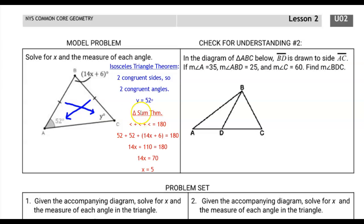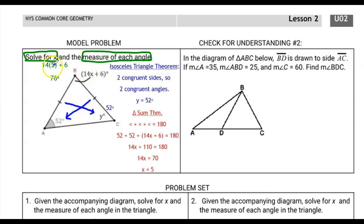Now that we have that information, we can solve for x using all three angles in the triangle sum theorem: angle plus angle plus angle equals 180. We substitute 52, 52, and 14x + 6. We don't substitute y because we need only one unknown. Solving gives x = 5. Then 14(5) + 6 = 76. As a check: 52 + 52 + 76 = 180. We must have done it right.